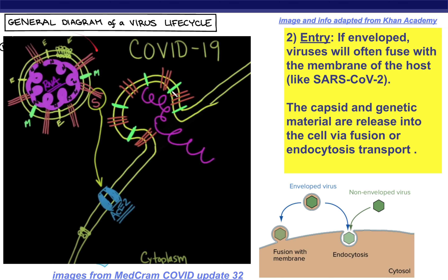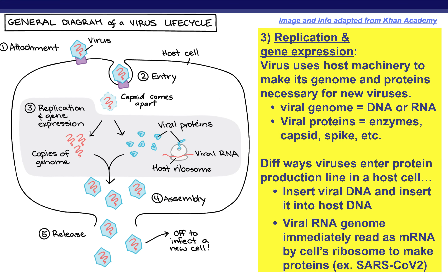As an example, COVID-19's spike protein binds the ACE2 receptor and releases the RNA genome inside the SARS-CoV-2 virus. Then we enter stage three: replication and gene expression. In this phase, the virus uses the host cell machinery to make its genome and proteins necessary for new viruses. If it's a viral genome, it'll be making either DNA or RNA. For viral proteins, it'll be making anything necessary for the virus to continue its job — enzymes, capsid, spike proteins, etc. Sometimes the first thing made is a viral RNA polymerase, which helps make the genome needed for the virus, and then that genome is used to make more viral proteins, and so on.